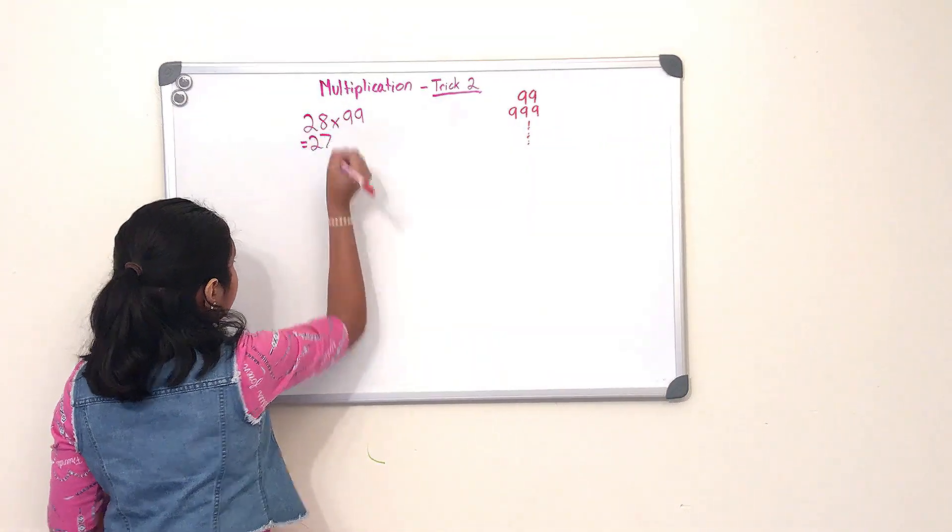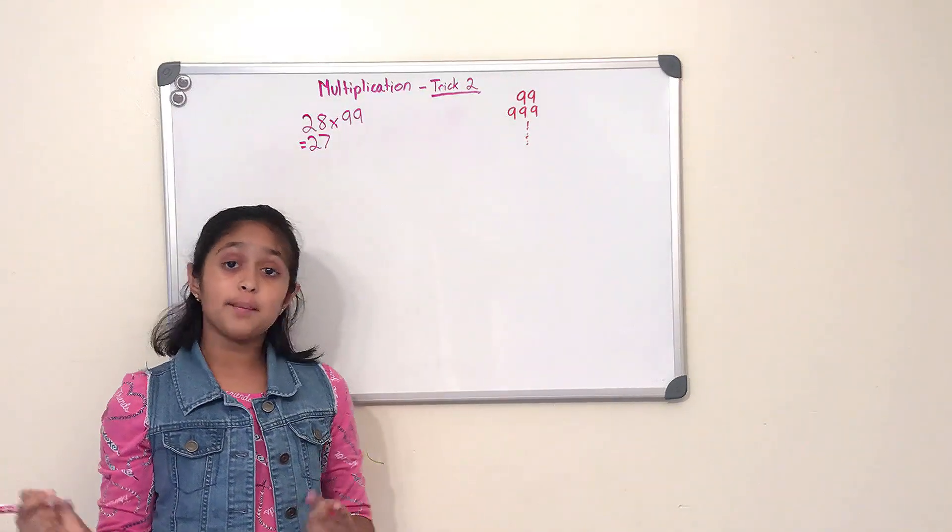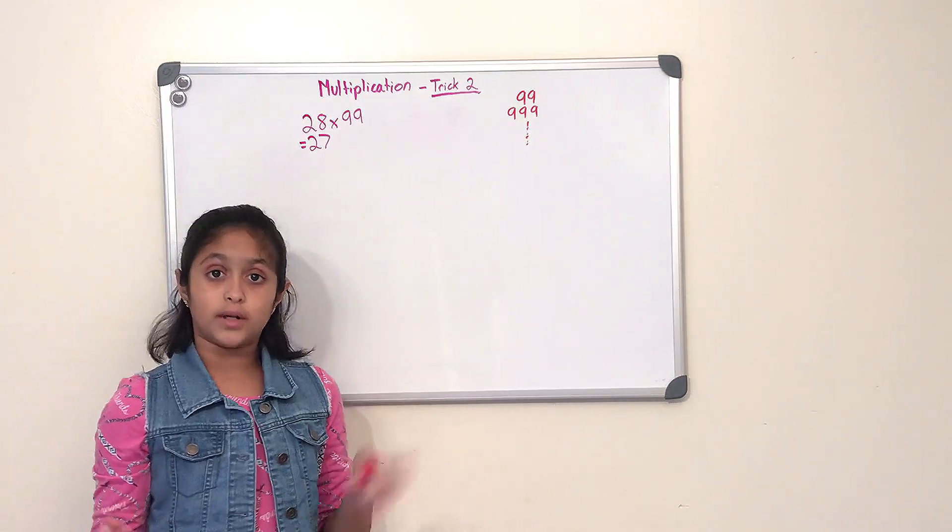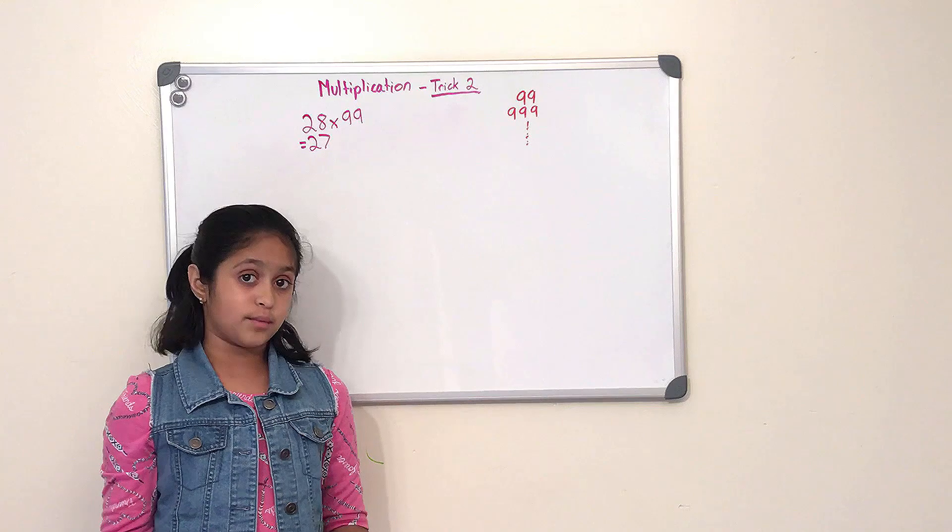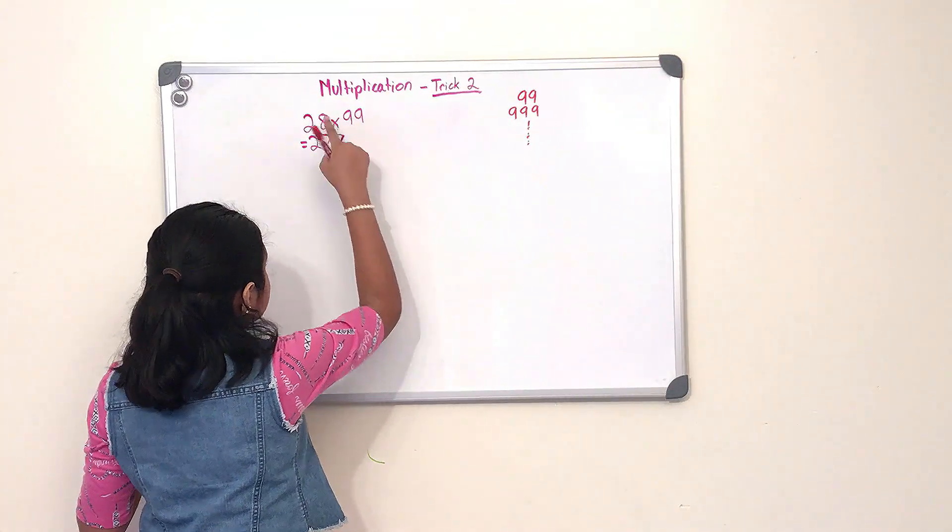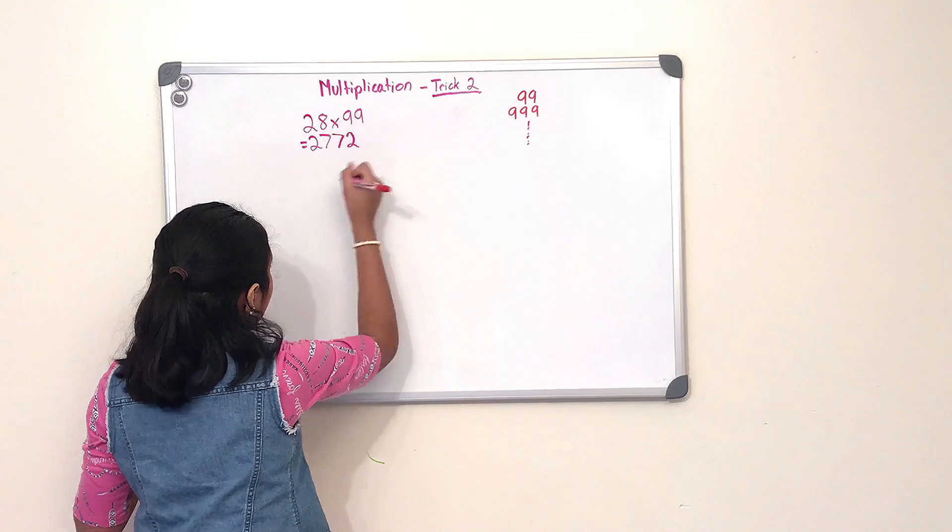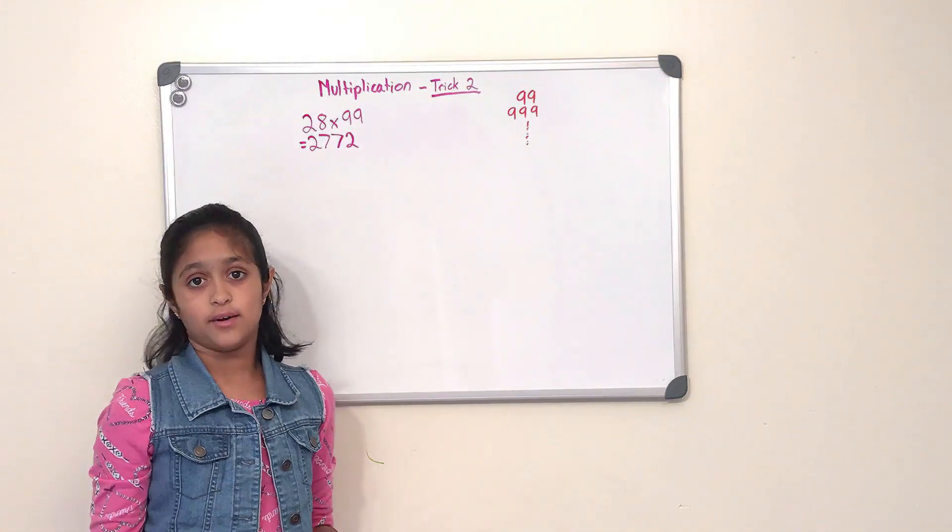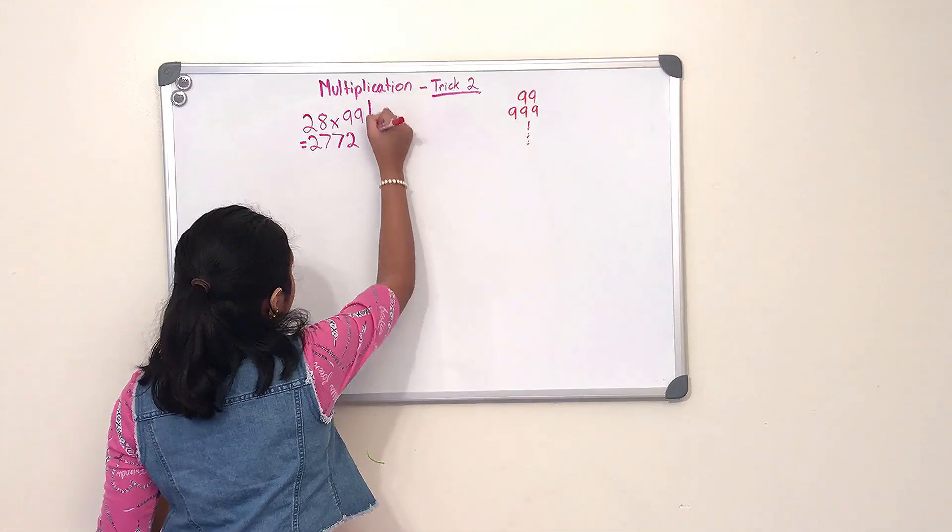And that would be 27. And then our second step is we have to apply the rule, which is we have to subtract all numbers from 9 and the last from 10. So 9 minus 2 would be 7 and 10 minus 8 would be 2, and this is our product: 2772. How would we do another one? How will we do 509 multiplied by triple 9?